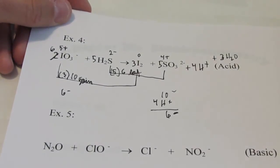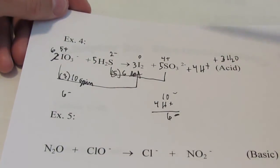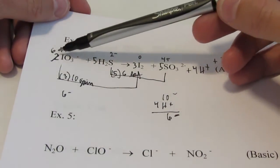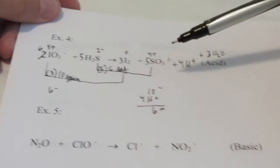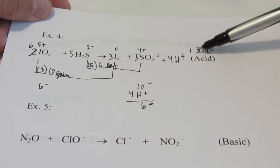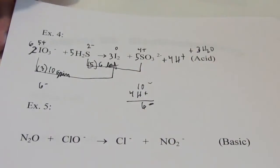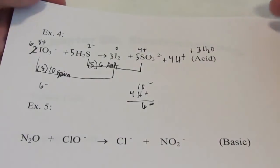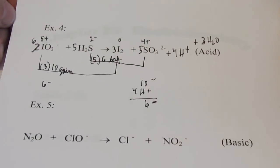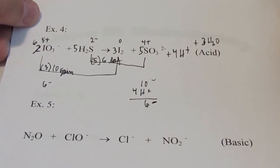Let's check our oxygens. Six times three is eighteen oxygens on the reactant side. On the product side we have fifteen plus three is eighteen. The oxygens balance — we did a good job.